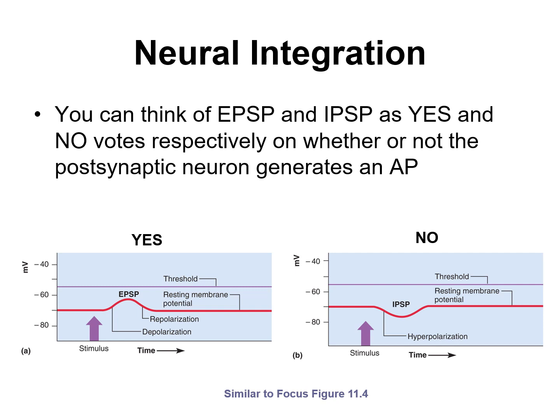Also take into consideration that some neurons may be releasing neurotransmitters that open potassium channels or chloride channels, and those are going to have inhibitory postsynaptic potentials, making it less likely that the postsynaptic cell will meet threshold. So it's the integration of the effects of all the neurons synapsing with a postsynaptic cell that will determine whether or not that receiving cell produces an action potential.